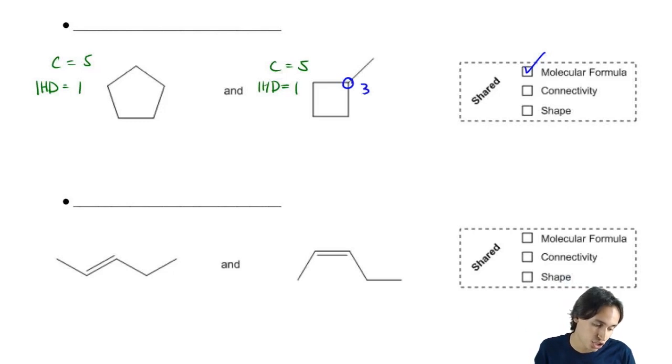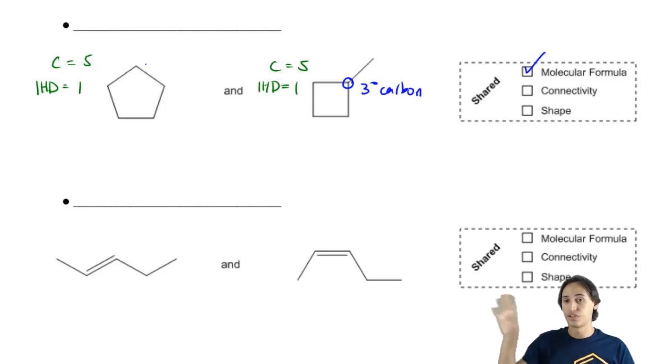For example, this one right here has a tertiary carbon. And this one over on the five-membered ring only has secondary carbons.